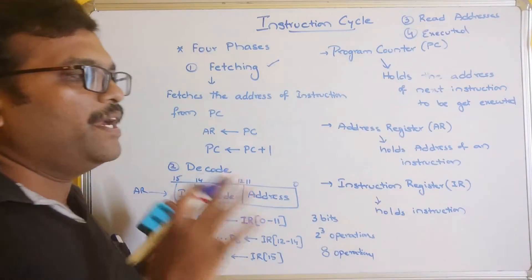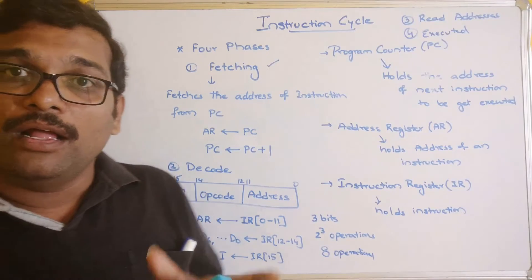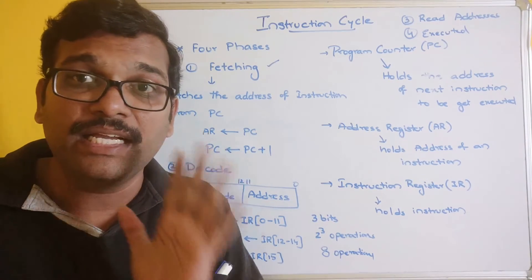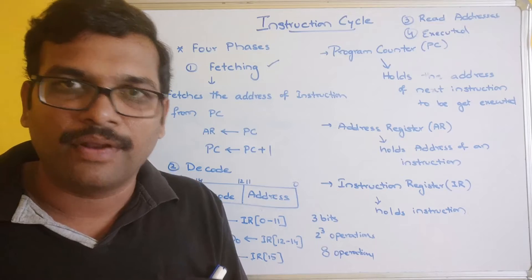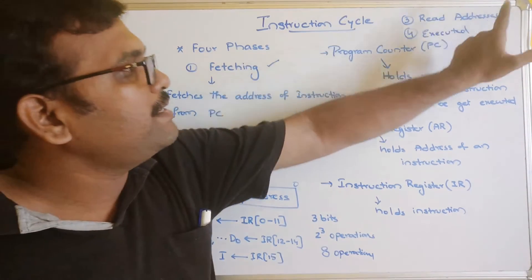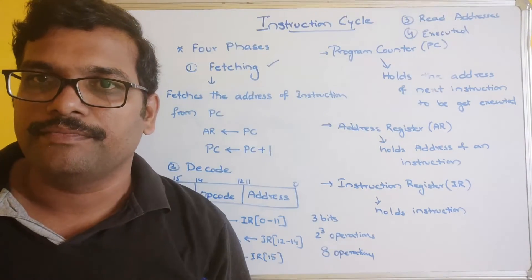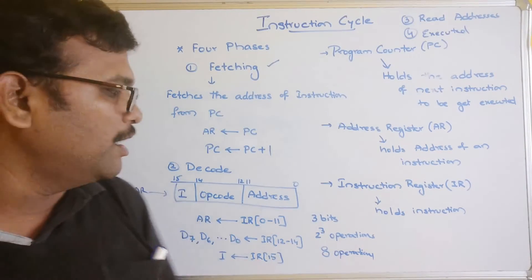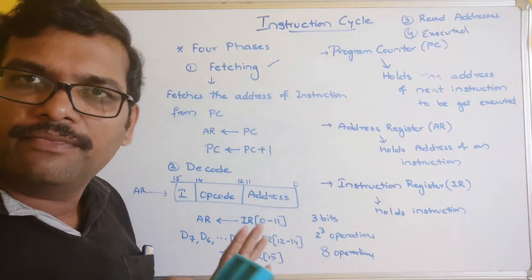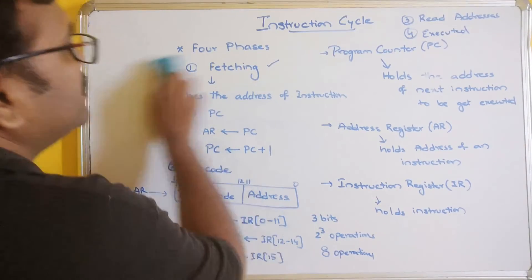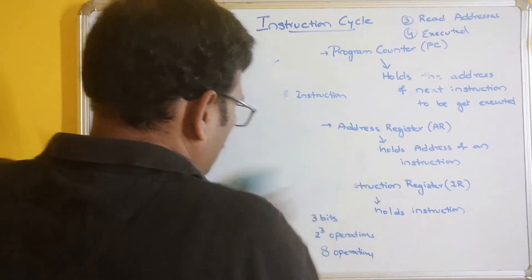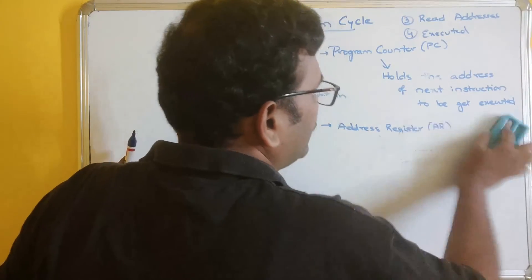So the complete process for executing one instruction involves fetching, decoding, reading the address, and execution. Now we will understand the same concept by drawing a flowchart.